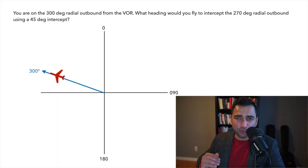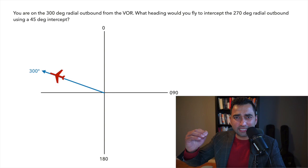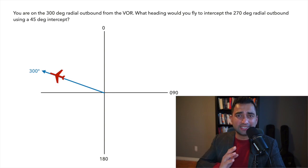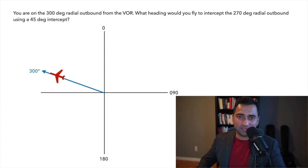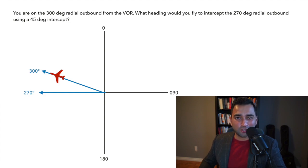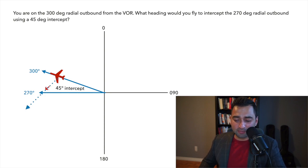In this second example, you're flying on the 300 degree radial outbound from the VOR, and the question asks you to intercept the 270 degree radial outbound using a 45 degree intercept. Draw the compass rose on a piece of paper, then draw the current radial — 300 degrees — with the aircraft pointing in the same direction. Then draw the desired radial of 270 degrees. Just by looking at the paper, you can see we need to turn left. Flying a 45 degree intercept to the left: 270 degrees minus 45 gives us an intercept heading of 225 degrees.